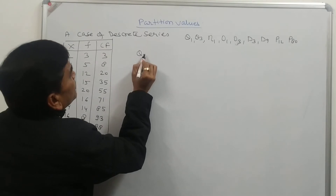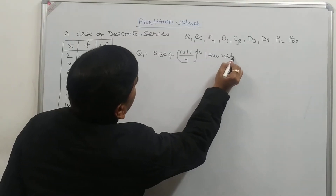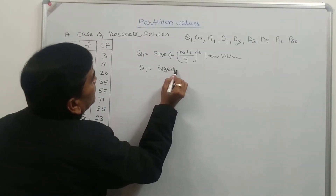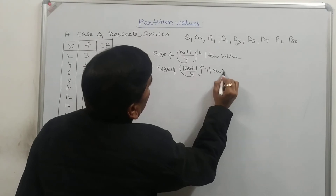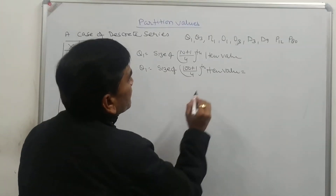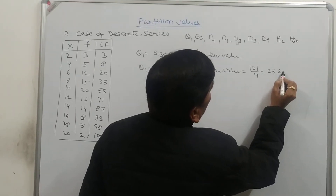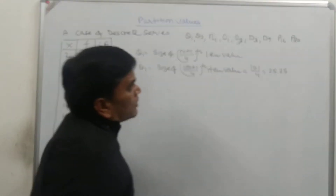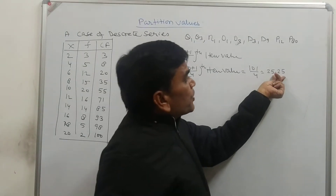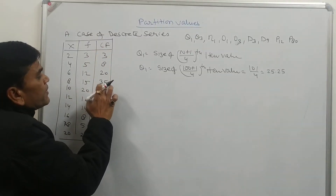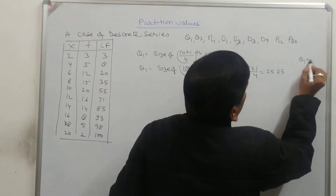Suppose we have to calculate Q1. Q1 is equal to the size of the (N+1)/4th item value. So Q1 equals the size of the (100+1)/4th item value, that is 101/4 = 25.25. 25.25 first lies within cumulative frequency 35, so the value of Q1 is equal to 8.